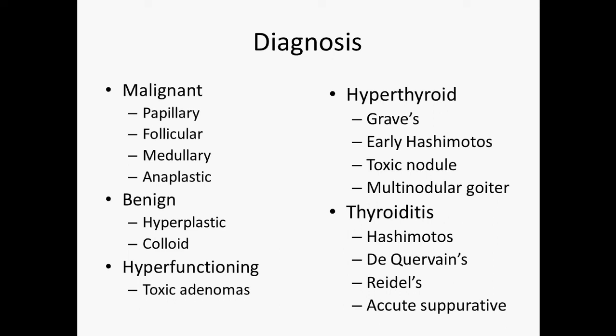The biggest concern is whether or not these nodules are malignant. Malignant nodules include papillary, follicular, medullary, and anaplastic. The most common benign thyroid nodules are hyperplastic and colloid. There are also thyroid nodules that produce thyroid hormone, known as toxic adenomas or hot nodules.